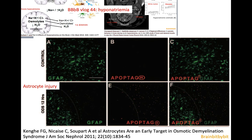The primary injury in osmotic demyelination is to the astrocytes. As discussed in the previous vlog on hyponatremia, if there is hyponatremia the brain cells shrink — especially the astrocytes — and they get rid of electrolytes and osmolytes. If you then restore that, the astrocytes get damaged, and this initiates the abnormalities seen in osmotic demyelination syndrome. This is a rat model of osmotic demyelination syndrome corrected after 12 hours, with a control population shown alongside.